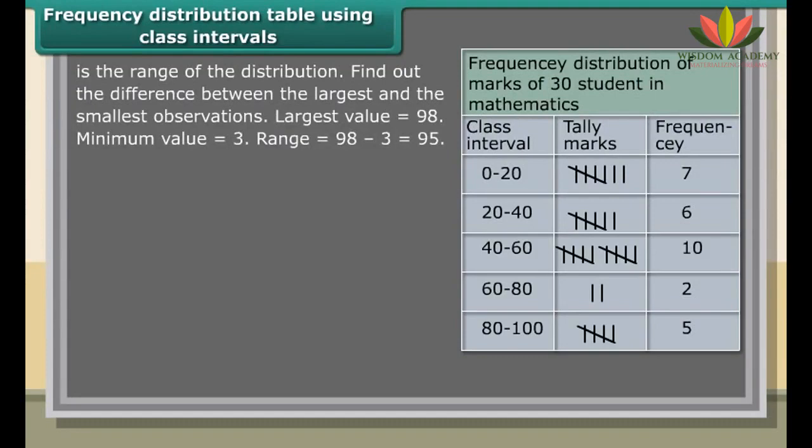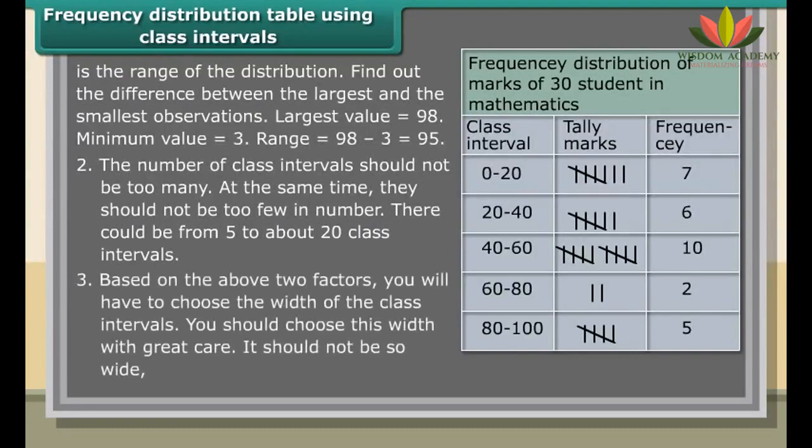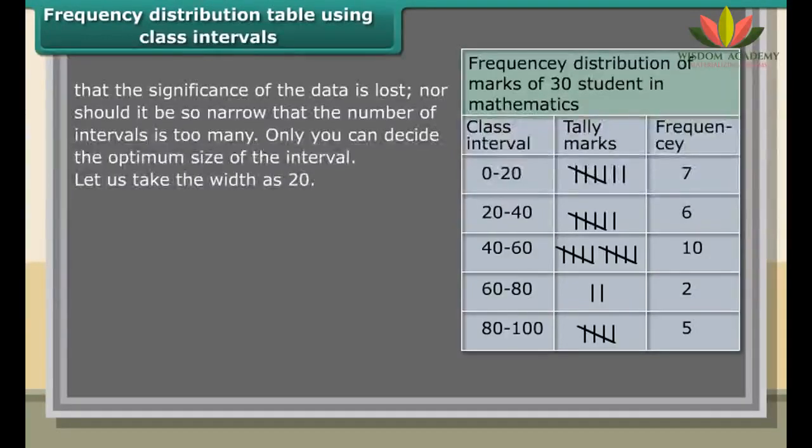Frequency distribution table using class intervals: Given below are marks scored by 30 children in a class in mathematics. When you group data into class intervals, the most important factor is the range of the distribution. Find out the difference between the largest and the smallest observations. Largest value is 98, minimum value is 3. Range is 98 minus 3 which equals 95.